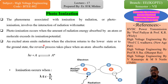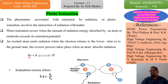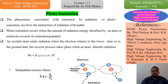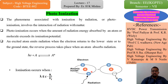An excited atom emits radiation when the electron returns to the lower or ground state; the reverse process takes place when an atom absorbs radiation. Here, h is Planck's constant and v is the velocity of light. Ionization occurs when lambda is less than or equal to c times h divided by Vi, where c is the velocity of light, h is Planck's constant, and Vi is the ionization potential.